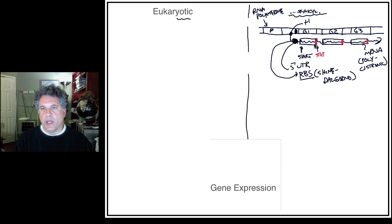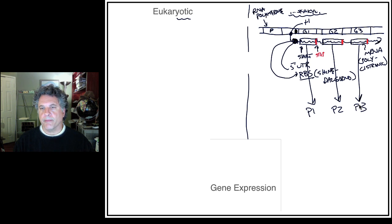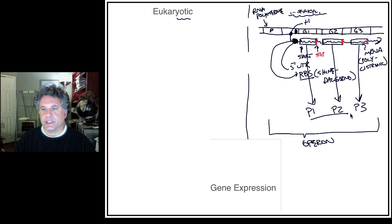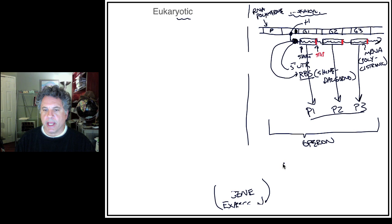Translation begins and stops for each coding region in this three-gene operon, such that each coding region encodes a different protein — protein 1, protein 2, and protein 3. The advantage of prokaryotes clustering their genes in an operon is that an operon is a cluster of genes which encode proteins, and these proteins are often involved in running the same biochemical pathway.